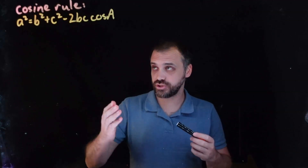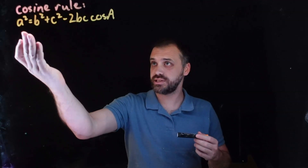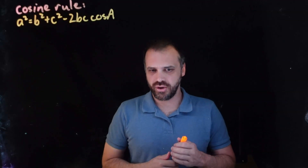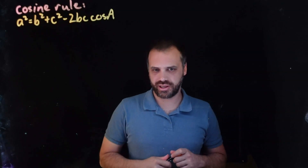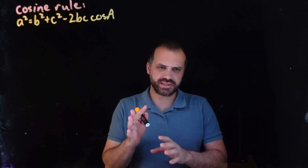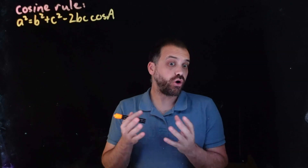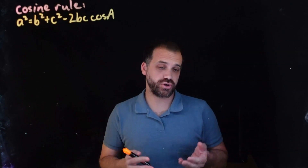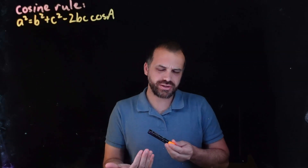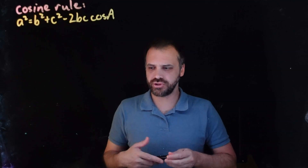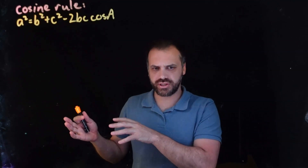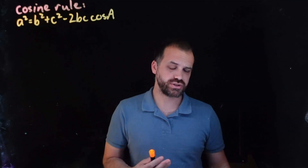We know what the cosine rule is — it's this big long formula. We're going to use it to find unknown lengths. Before we get started, I really want to talk about why you would use the cosine rule, because it is more complicated looking than the sine rule. So you want to avoid using it unless you have to.